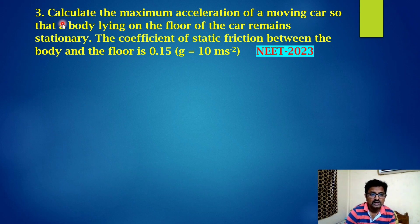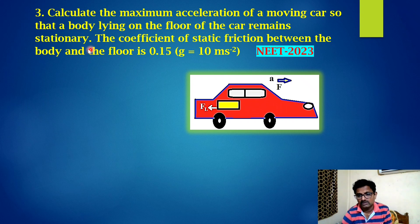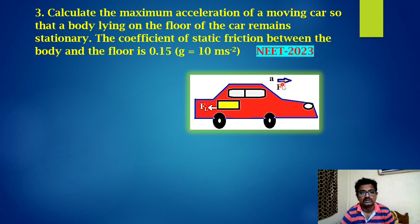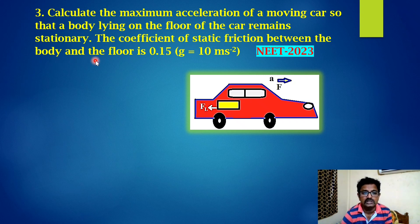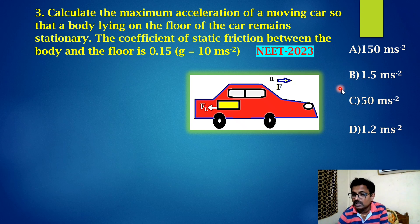Third question: calculate the maximum acceleration of a moving car so that a body lying on the floor of the car remains stationary. Look at the figure — one car is there, and we have to calculate its maximum acceleration such that a body lying on the floor remains stationary. The coefficient of static friction between the body and floor is 0.15, and g = 10 m/s². This was given in NEET 2023.